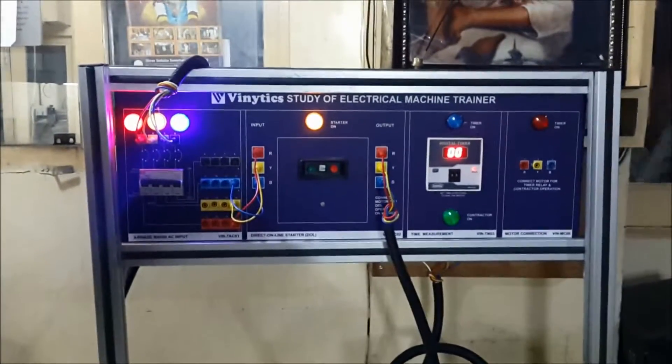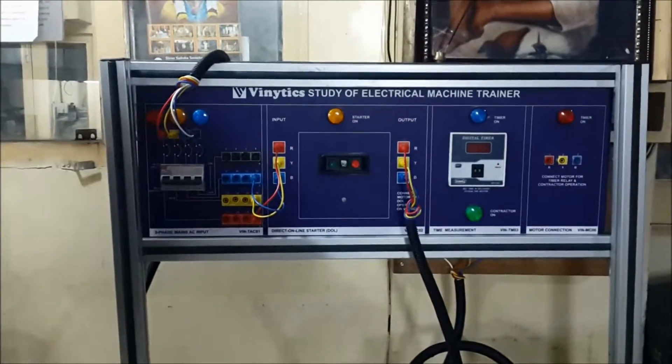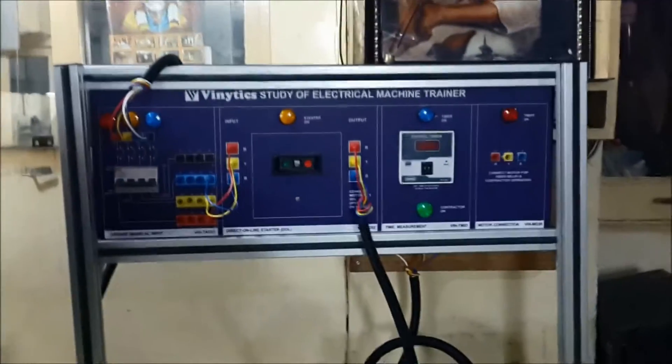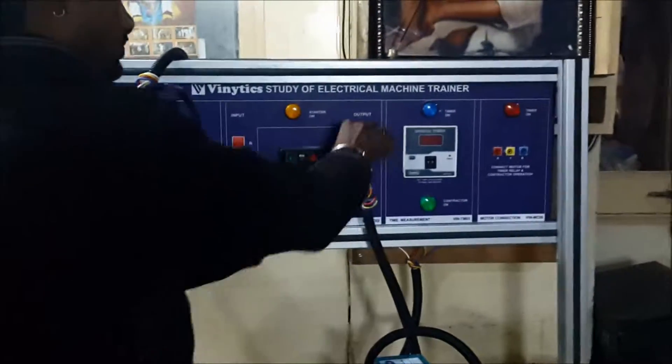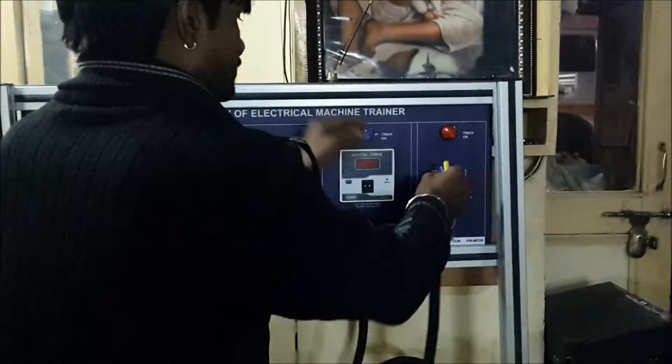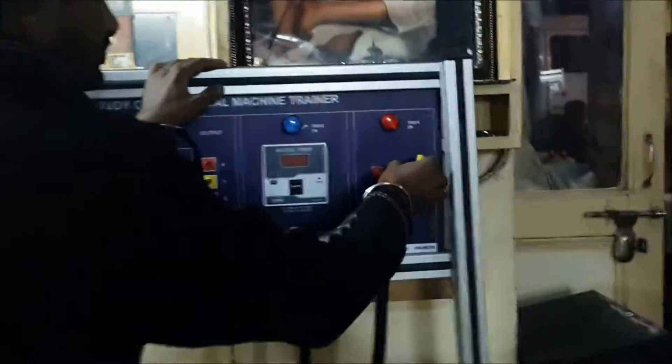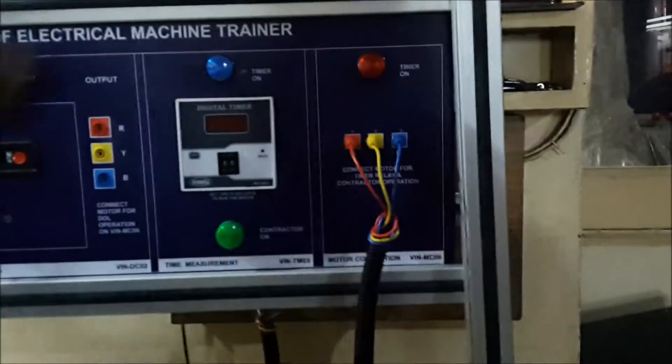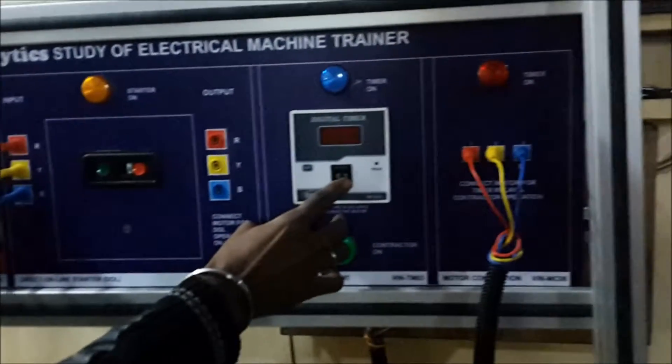Now we will perform the second experiment. Switch off the trainer first, then change the motor connections from the output of the DOL starter to the panel marked as VIN-MC06. Set the timer to 5 seconds.